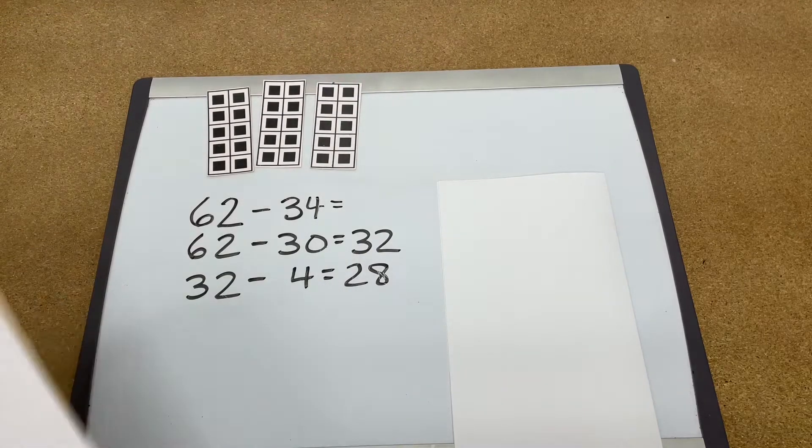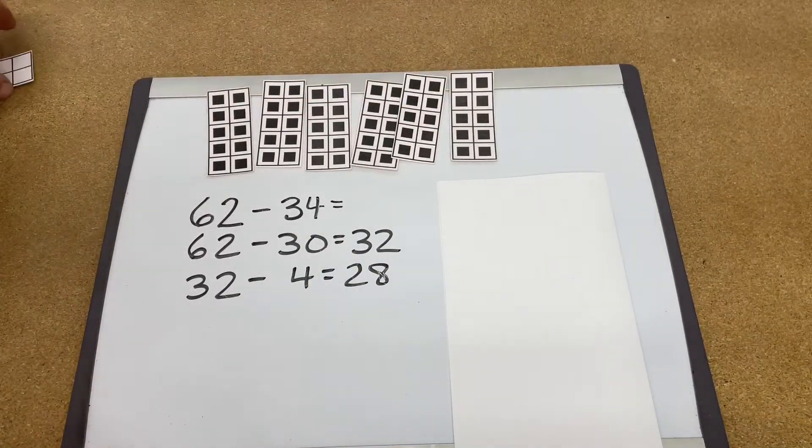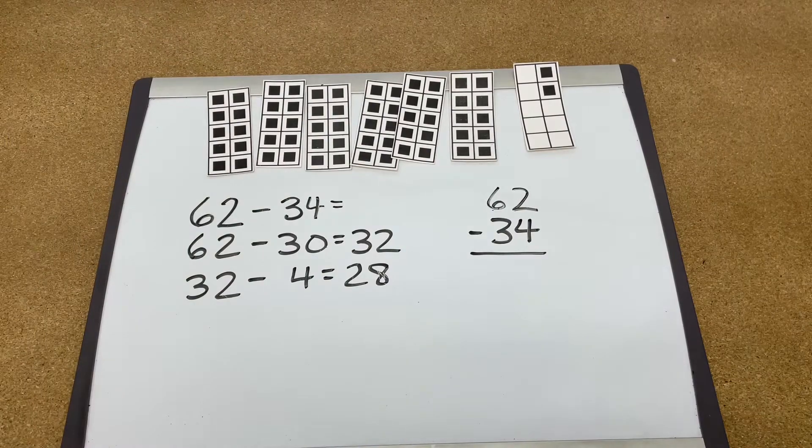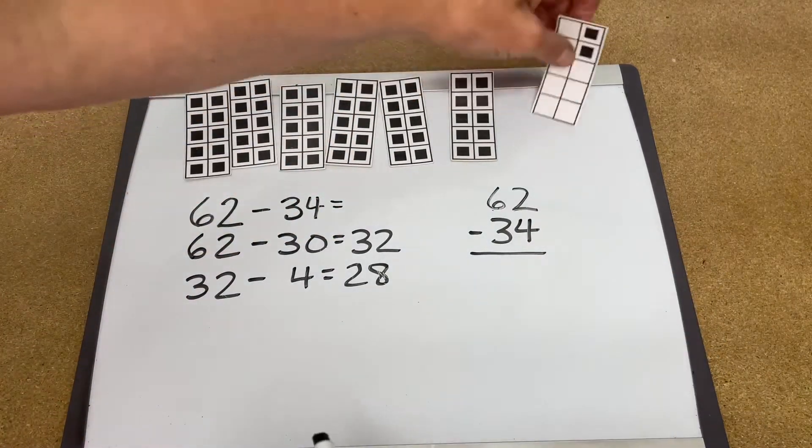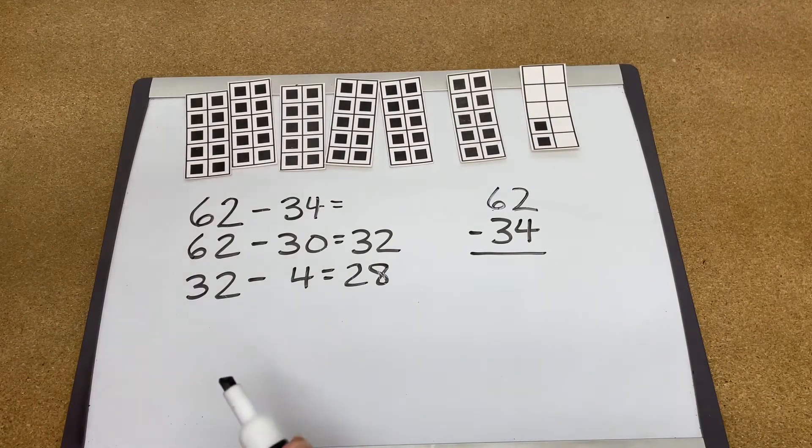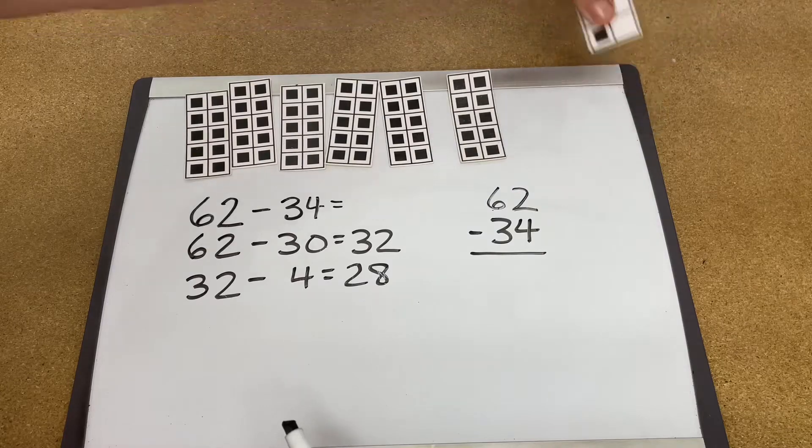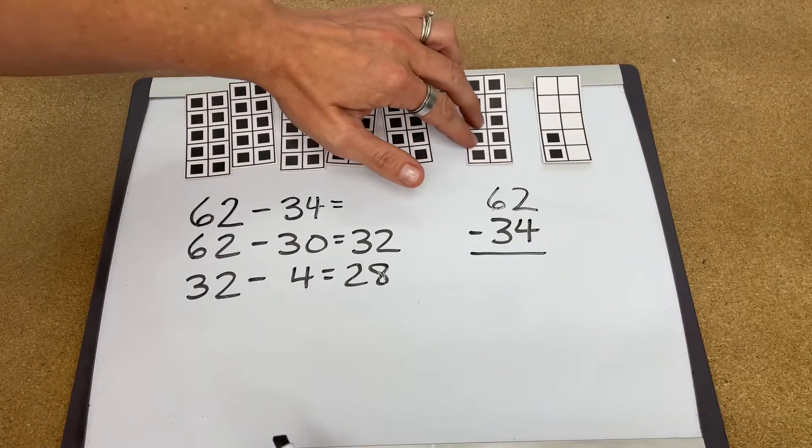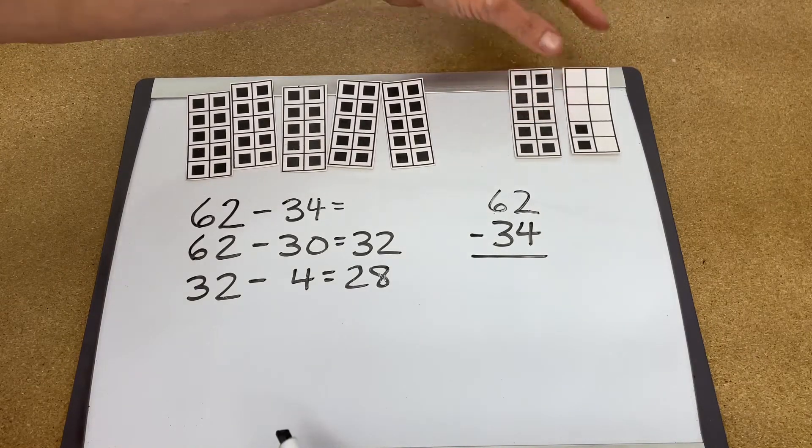So how about if we wrote the same question vertical? 62 take away 34. What happens now? Well, we start with the 2. 2 take away 4. So we need to take away the 2, but we need to take away 2 more. So to take 2 more, we need to borrow this 10, making this the number 12.